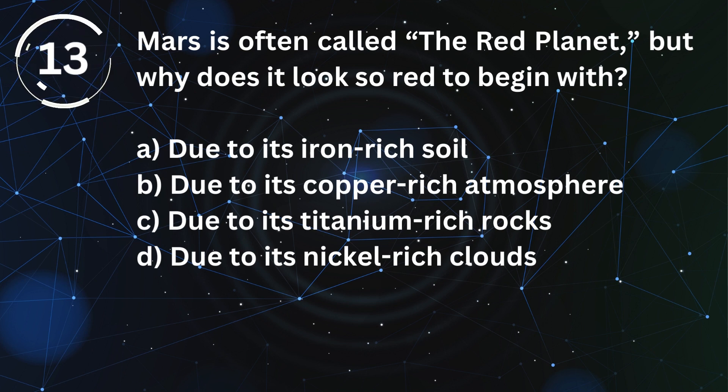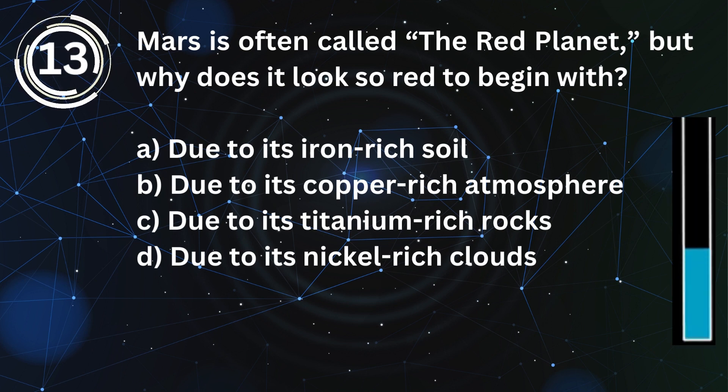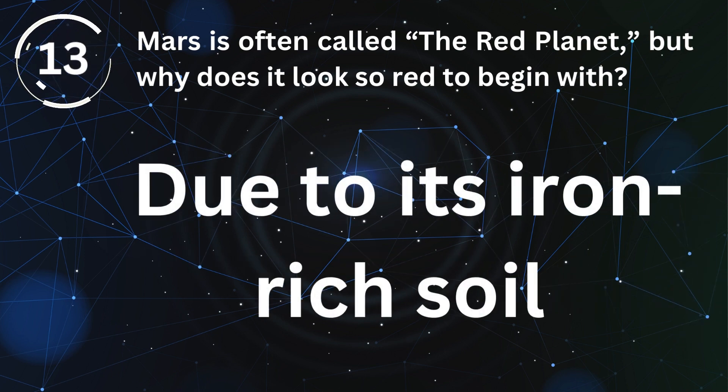Mars is often called the red planet, but why does it look so red to begin with? Due to its iron-rich soil.